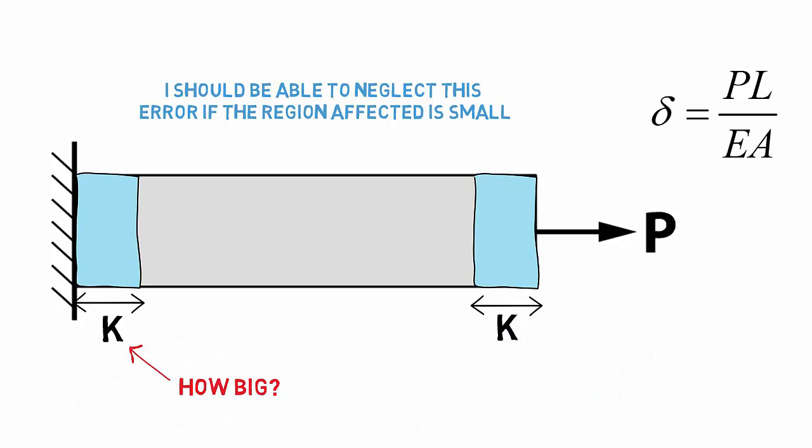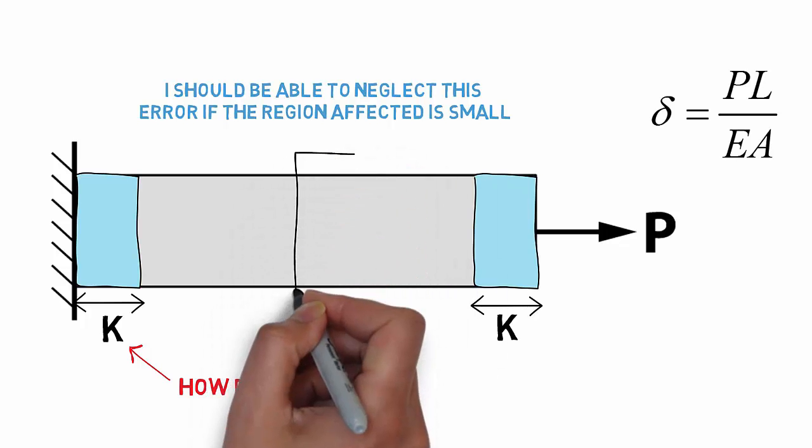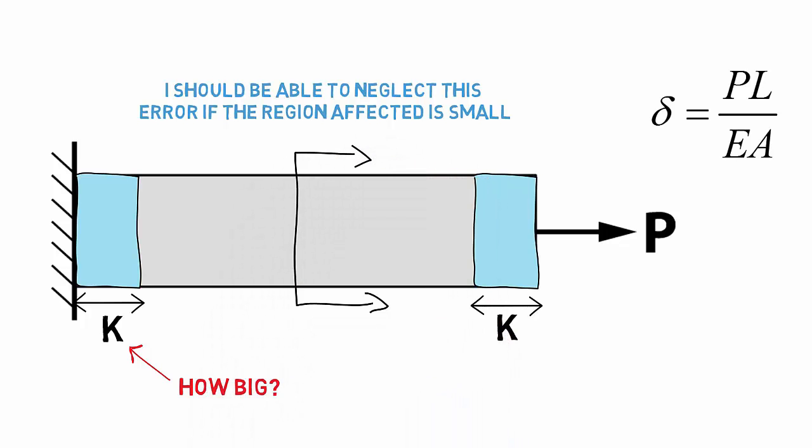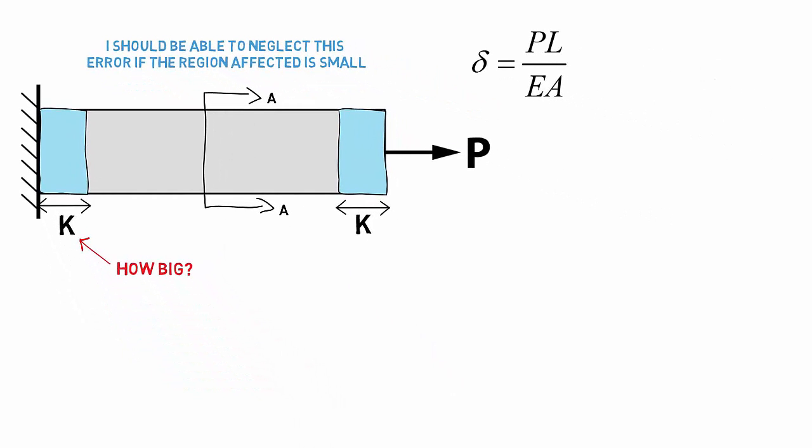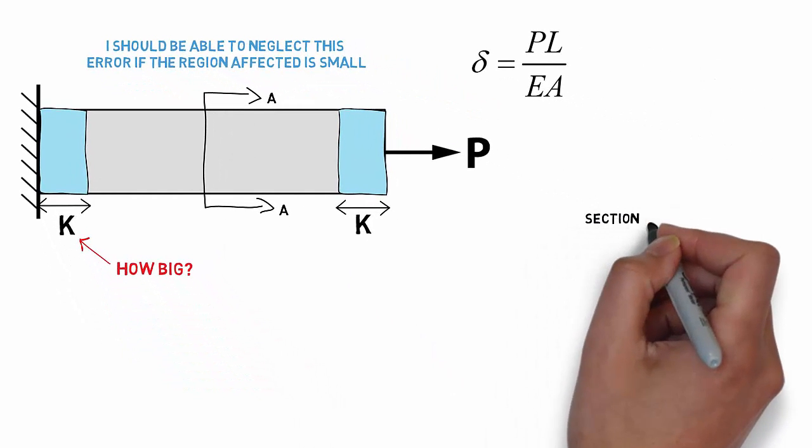It turns out that the answer to that question is not entirely straightforward, and can depend a lot on the type of constraint provided by the particular boundary condition. However, a general rule of thumb is that the length k is equal to the largest cross-sectional dimension.